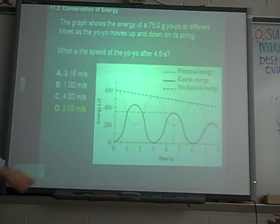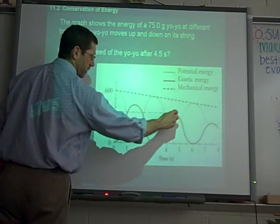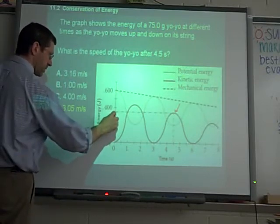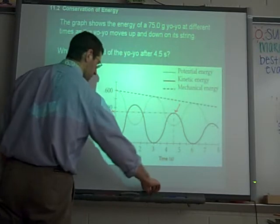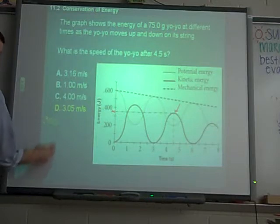The next question: what is the speed of the yo-yo after four and a half seconds? If you look here at four and a half seconds, I have that point marked right there. The energy at that point is 0.350 joules. The equation for kinetic energy is one half mv squared.